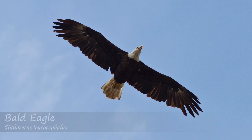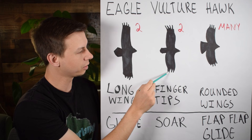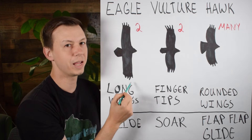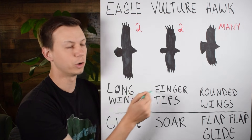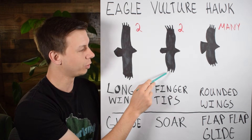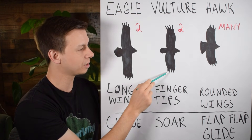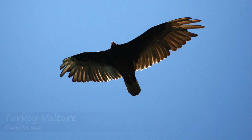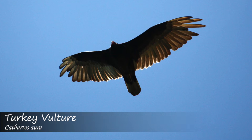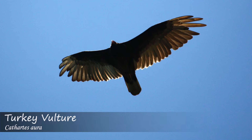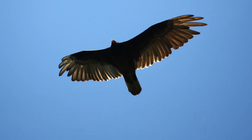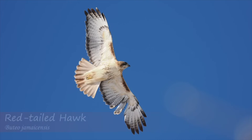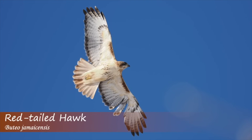The wings on the vulture are going to look like they have these fingertips. They all may show those fingertips at the end of the wing, but it's going to be very prominent in the vulture, and they may also look like they're pointed backwards to some degree. The hawk wings are going to be a little more broad and rounded compared to the others.